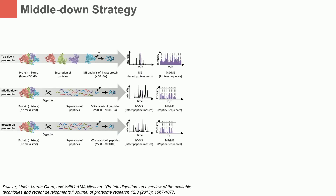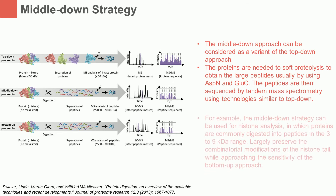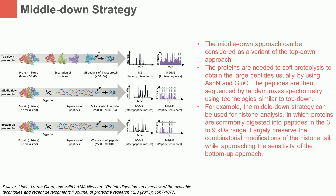Middle-down proteomics has recently emerged as a high-throughput strategy to define post-translational modifications. The middle-down approach can be considered as a variant of the top-down approach. In this strategy, the proteins are subjected to proteolysis to obtain large peptides. The peptides are then sequenced by tandem mass spectrometry using technologies similar to top-down. For example, the middle-down strategy can be used for histone analysis, in which proteins are commonly digested into peptides in the 3 to 9 kDa range. The middle-down approach largely preserves the combinatorial modifications of the histone tail, while approaching the sensitivity of the bottom-up approach.